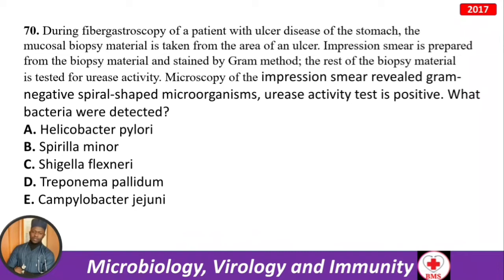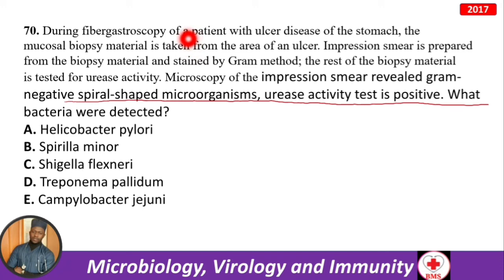During fibrogastroscopy of a patient with gastric ulcer disease, a mucosal biopsy is taken. Impression smear prepared from the biopsy material and stained by Gram method; the rest of the material tested for urease activity — urease positive. The diagnosis is H. pylori.